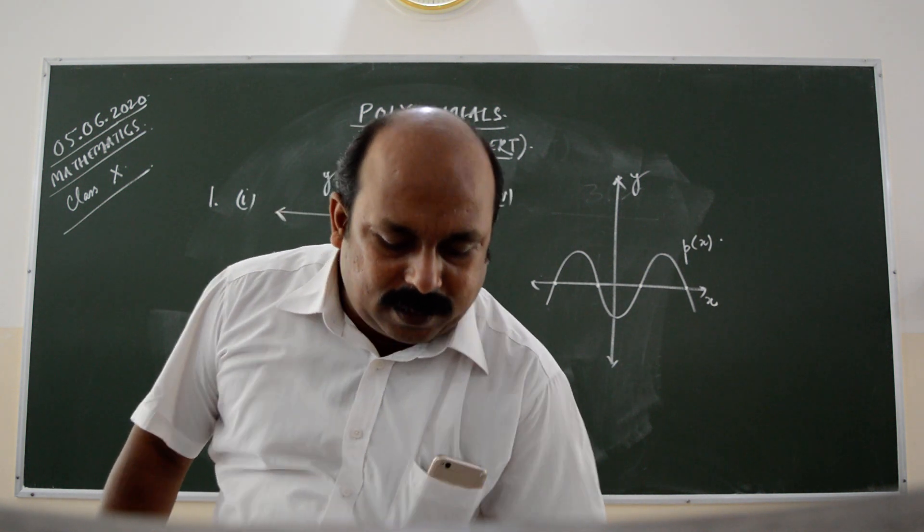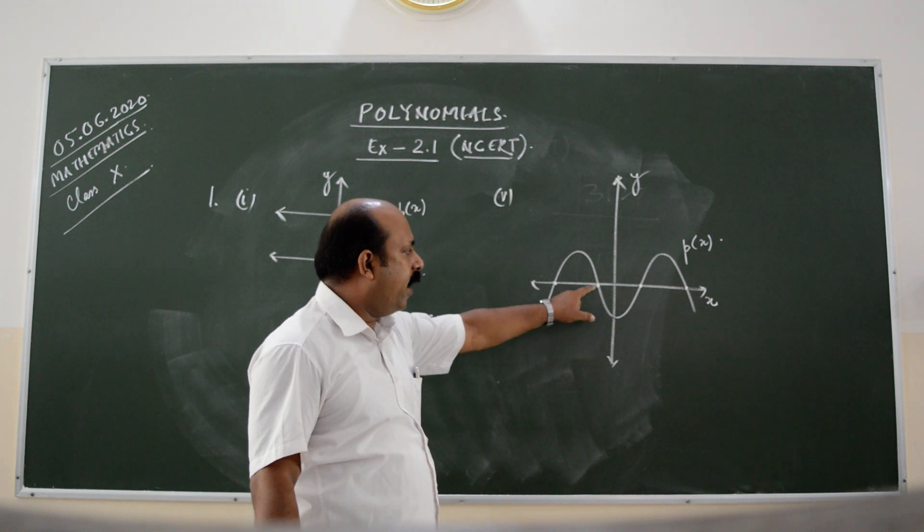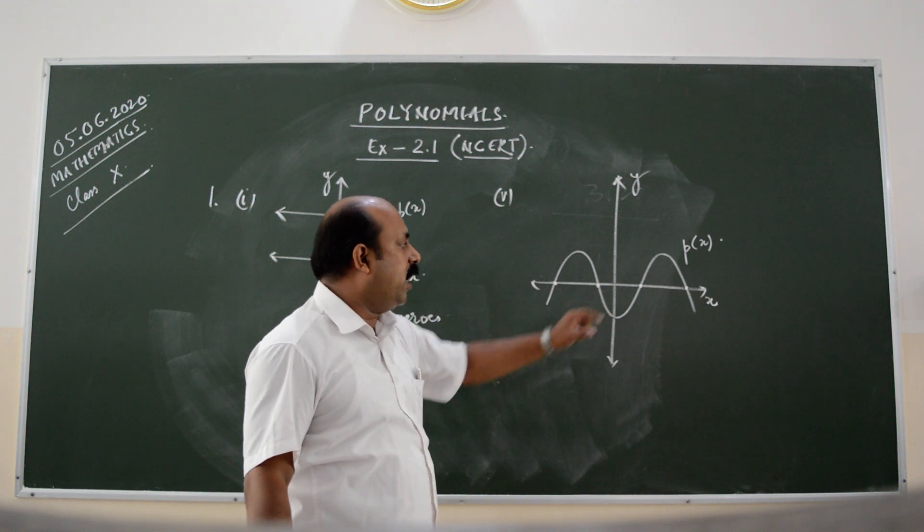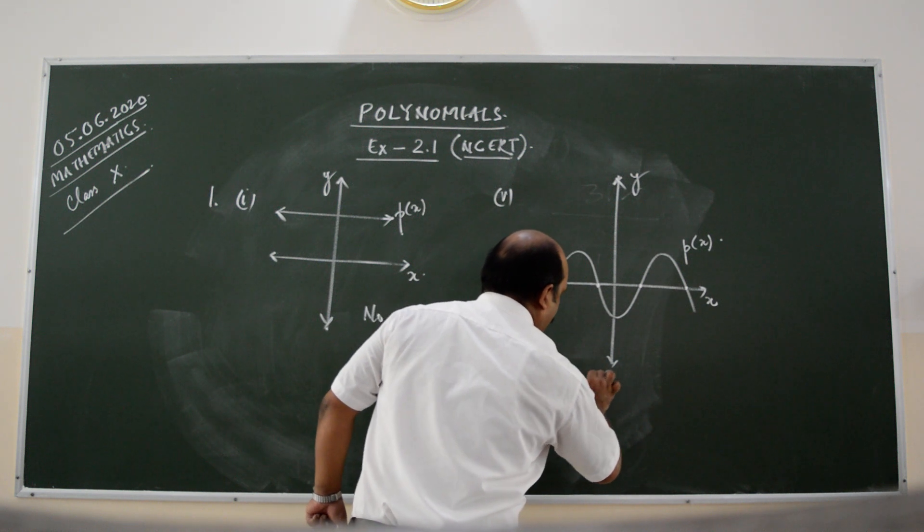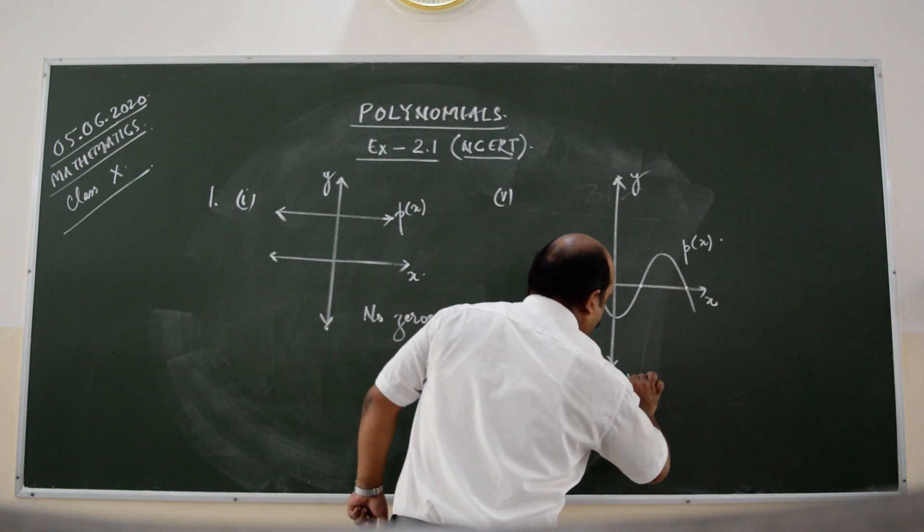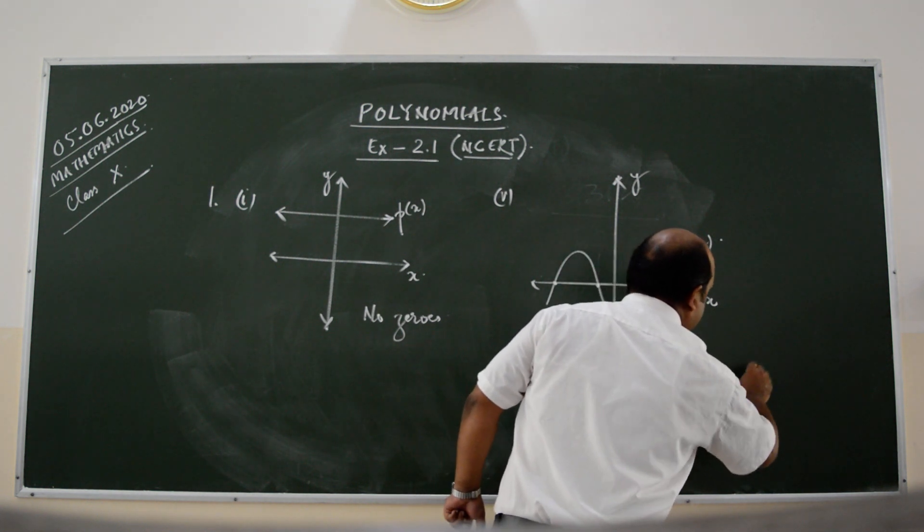You will see that the graph of y is equal to p of x is intercepting the x axis at four distinct points. So, we can say the number of zeros of p of x is equal to four.